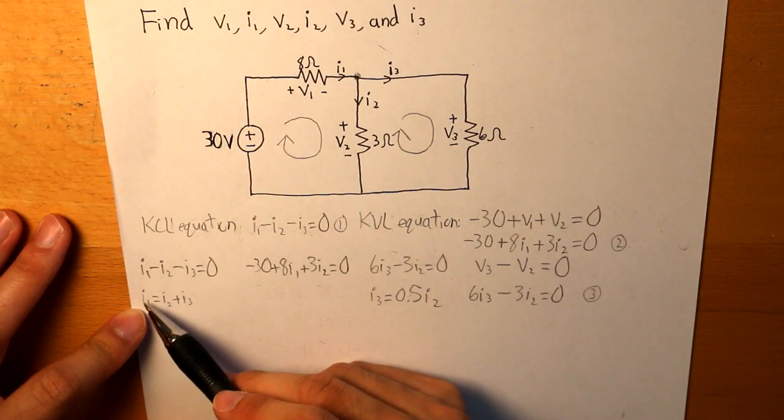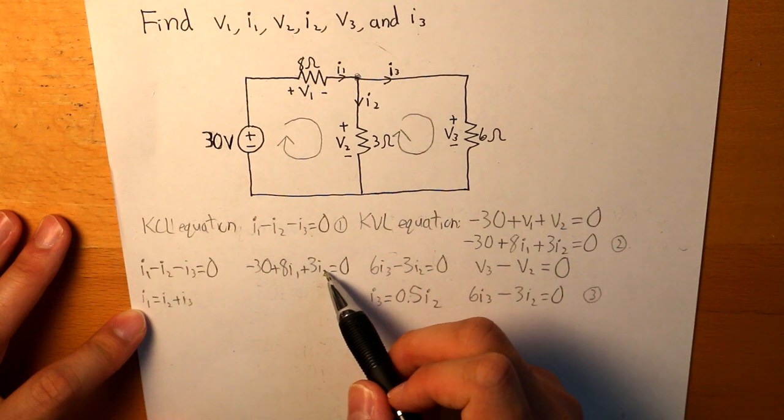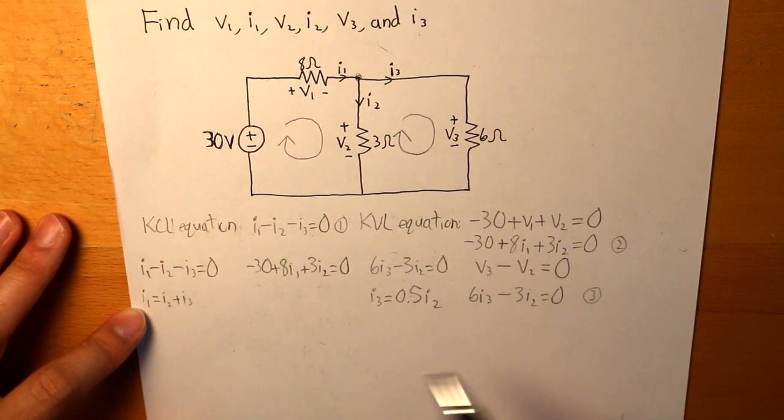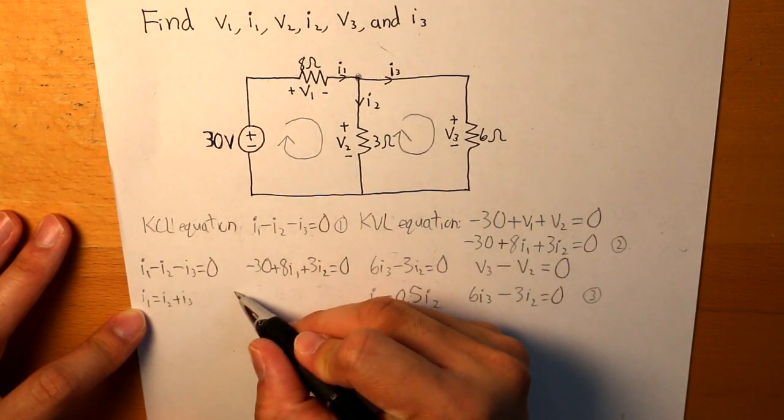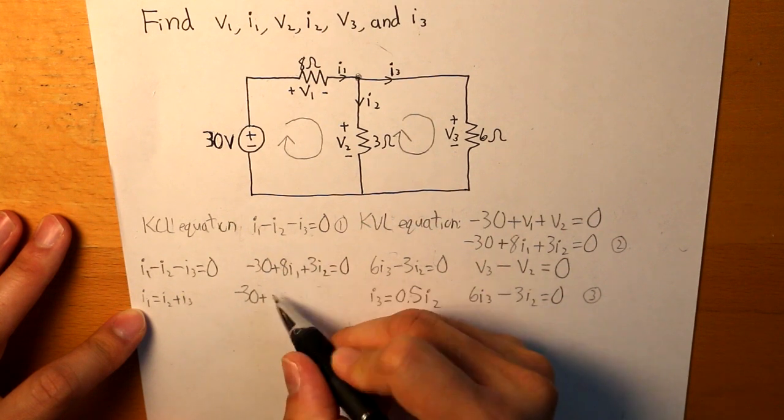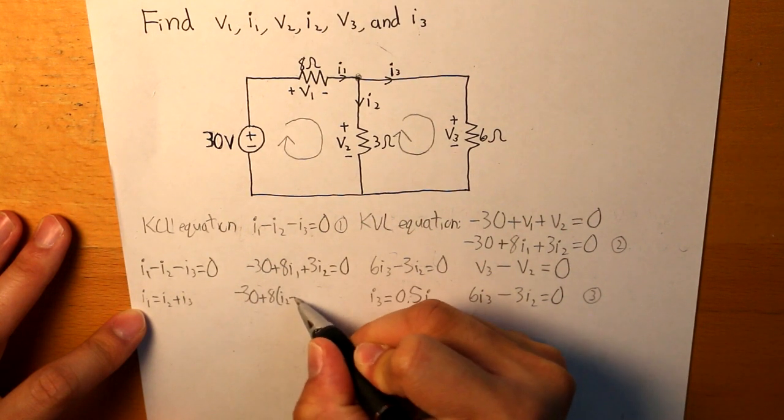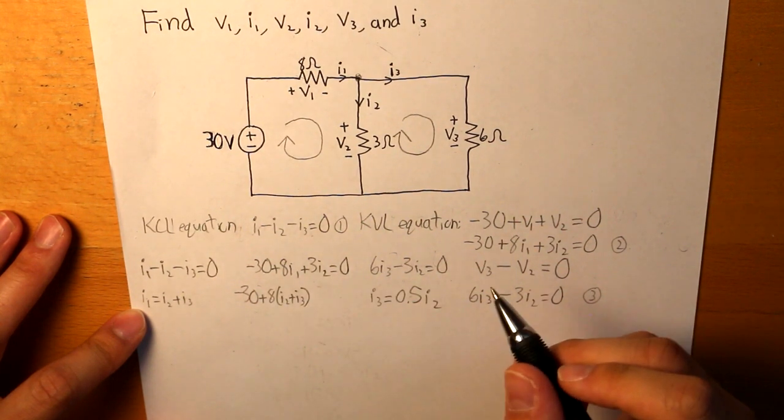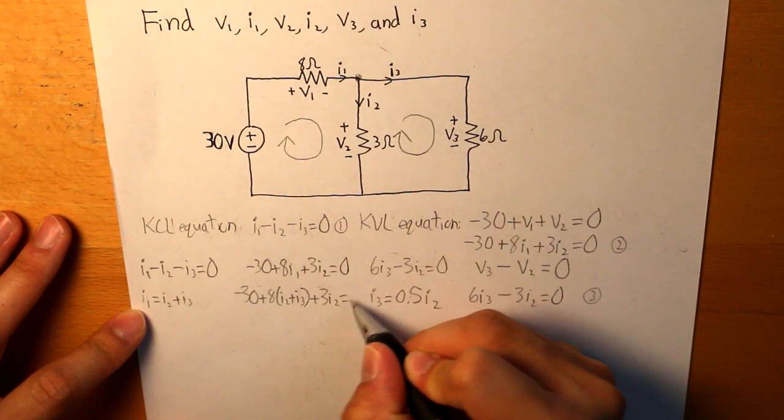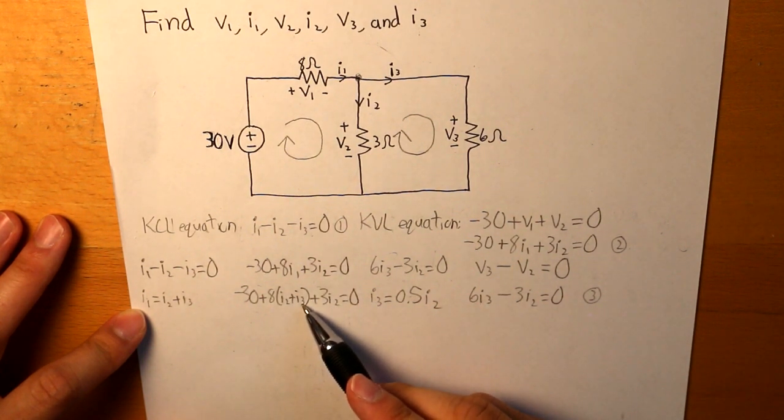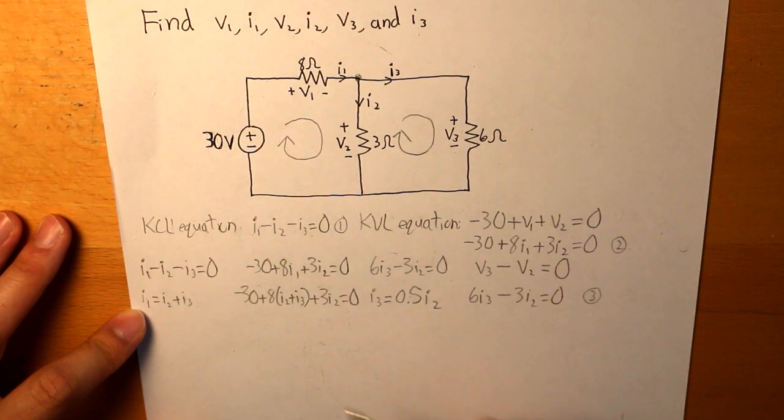And now, given I1 and what I3 is, we can sub it in to get what I2 is. So we have minus 30 plus 8I2 plus I3 plus 3I2 is equal to 0. And we know what I3 is, which is 0.5 times I2.